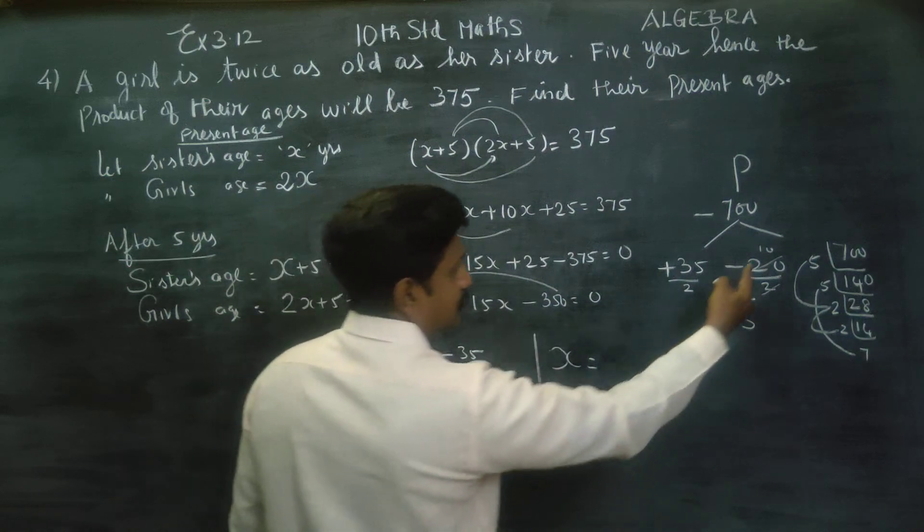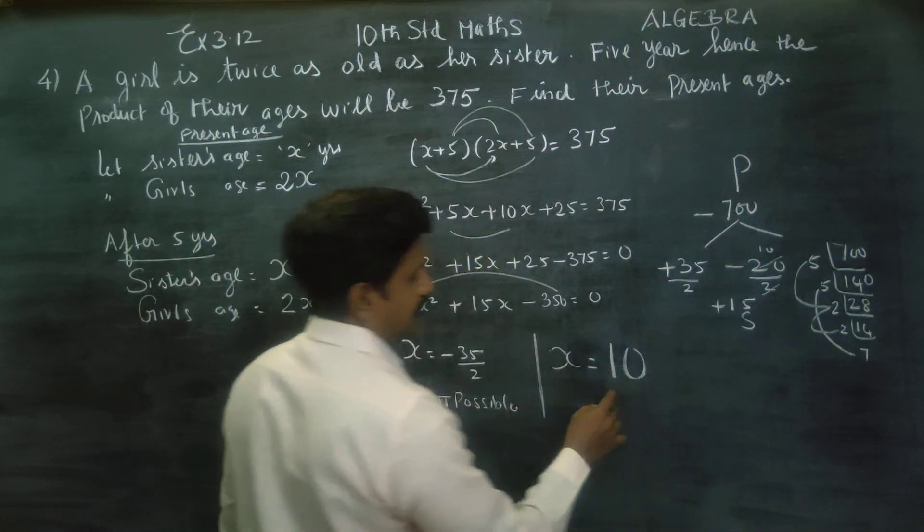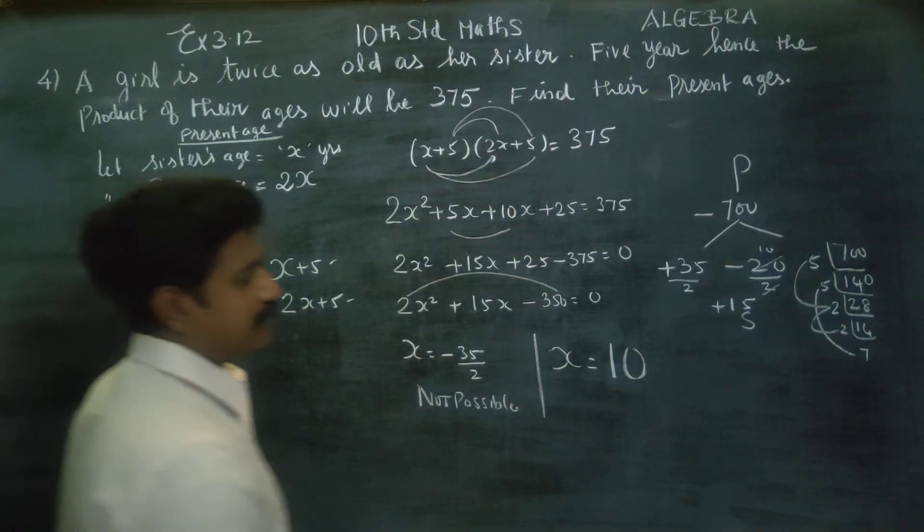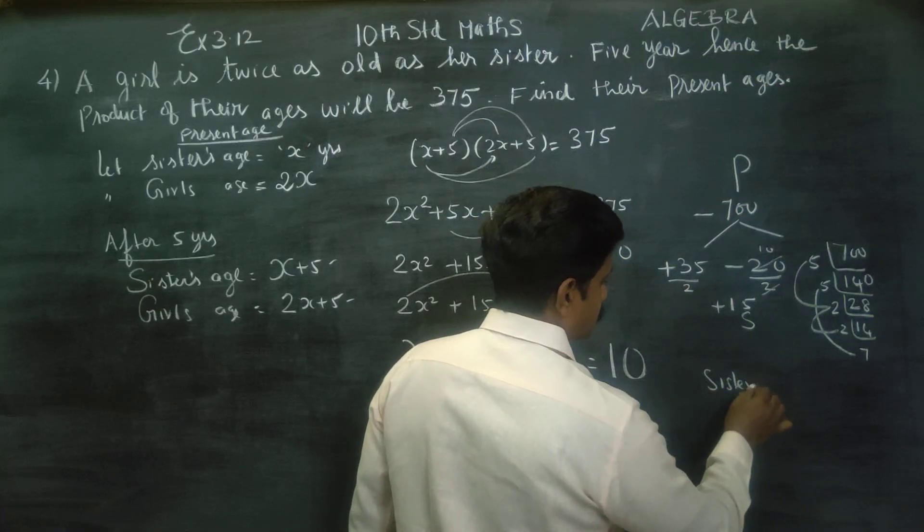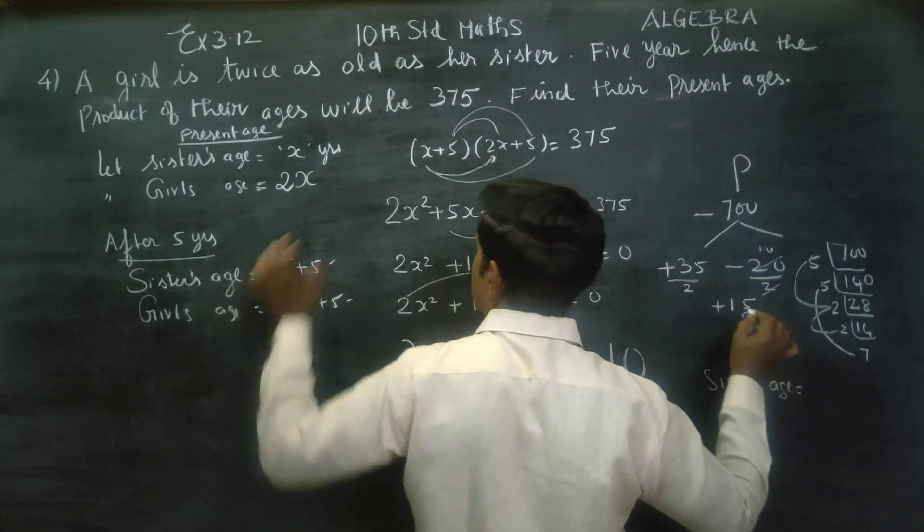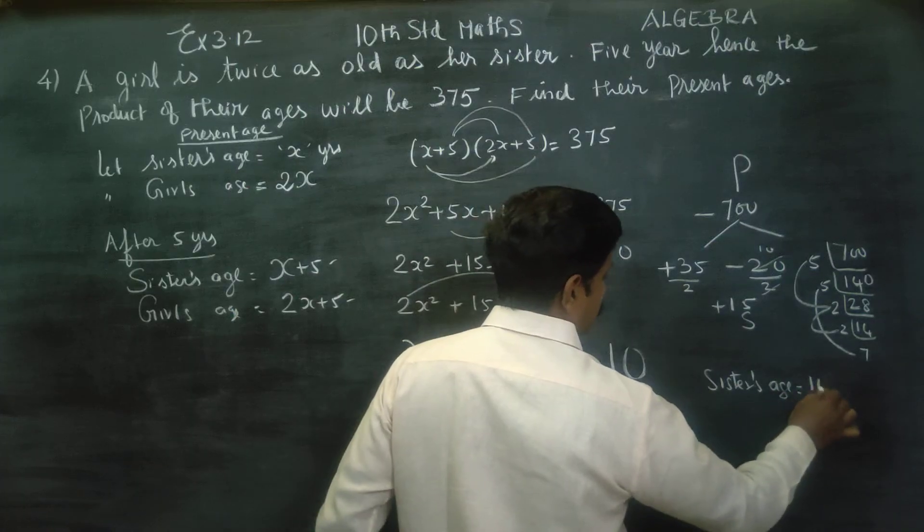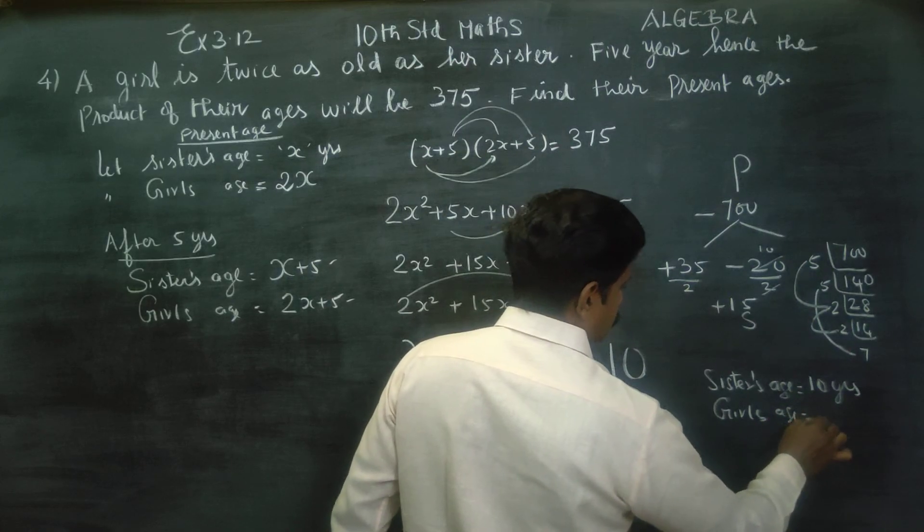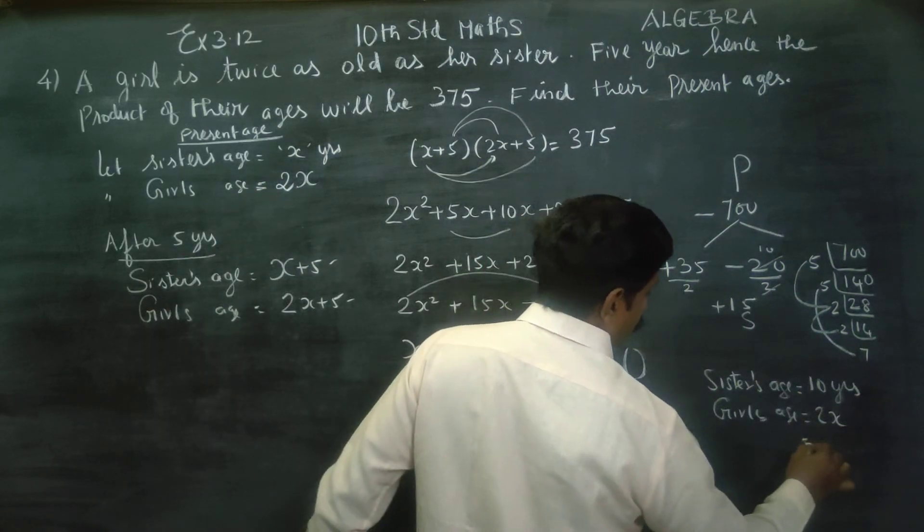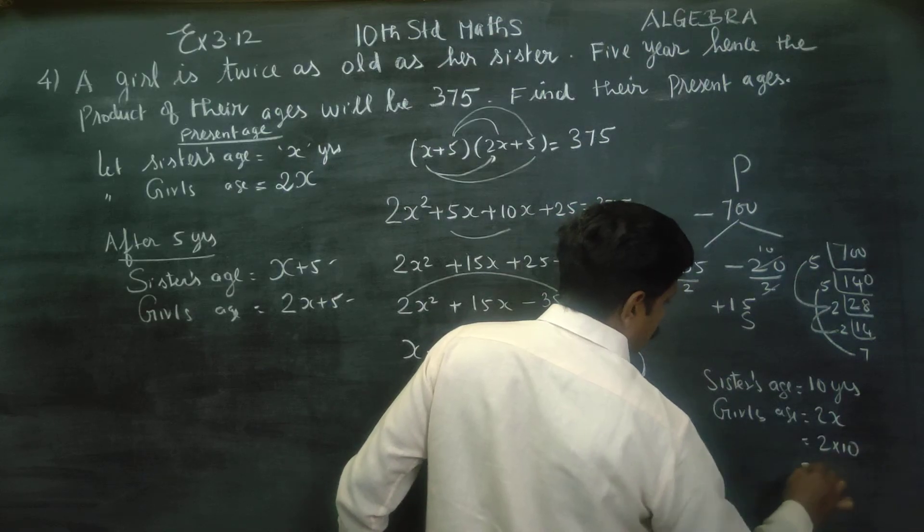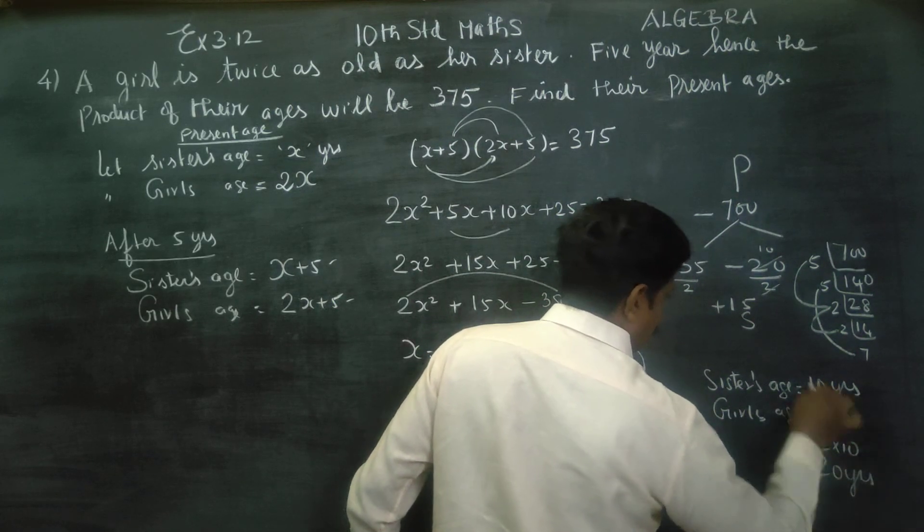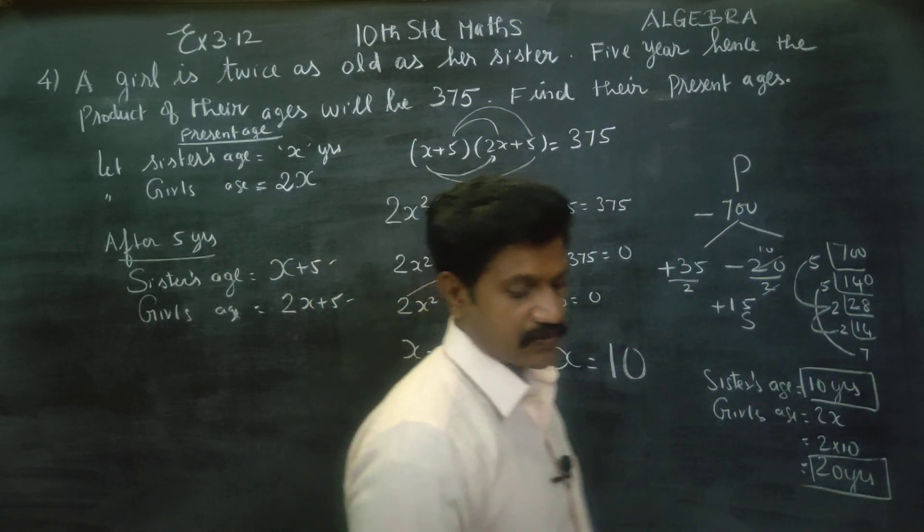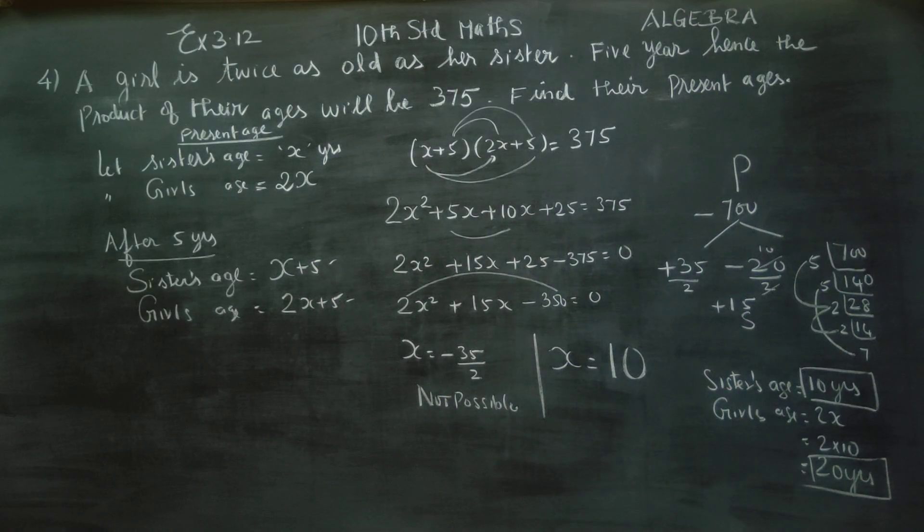So x is equal to 10, this is possible. x is equal to 10 years. Final answer: sister's age is equal to x, 10 years. Girl's age is equal to 2 times x, 2 times 10, your answer will be 20 years. Sister age is 10 years and the girl's age is 20 years. Thank you.